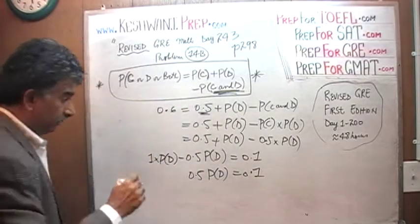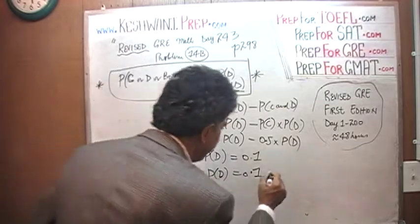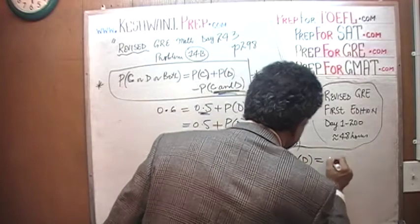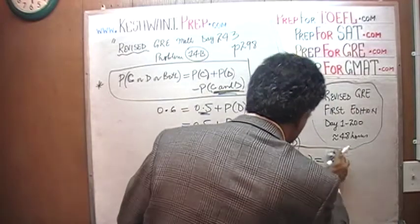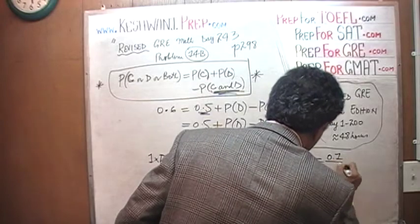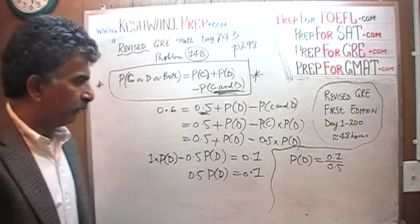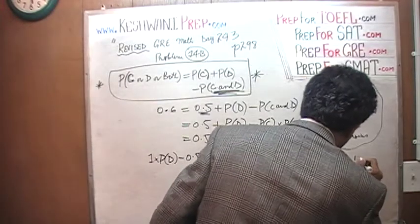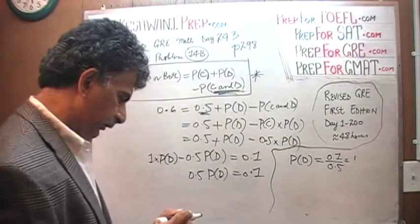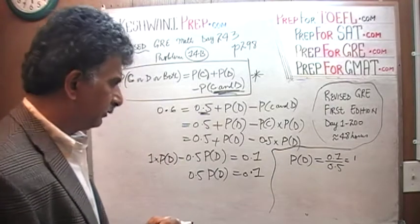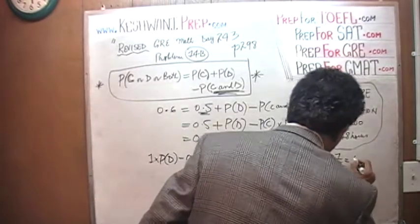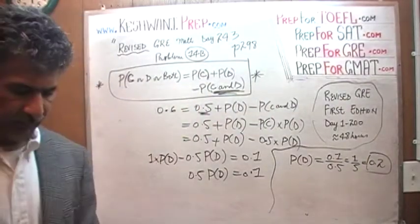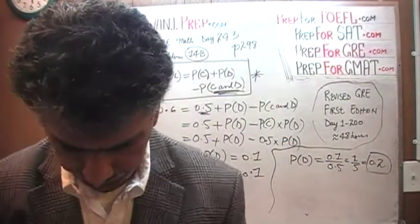Divide both sides by 0.5: P(D) = 0.1 over 0.5. Multiplying top and bottom by 10 gives 1 over 5, which is 0.2. The probability of event D is 20%. And that's our answer.